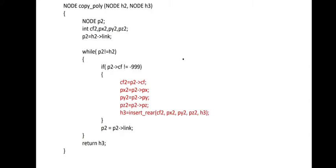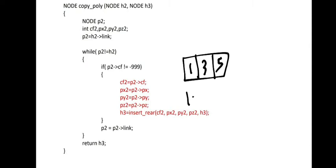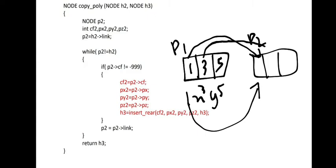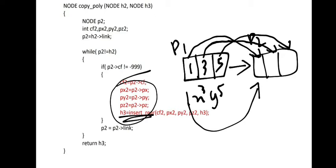Copy polynomial: if polynomial p1 has a node 1, 3, 5 representing 1x³y⁵, to copy it to p2 we copy cf from p1 to p2, px from p1 to p2, and py from p1 to p2. Then it is inserted at the rear of the new list. That's how copy polynomial works.